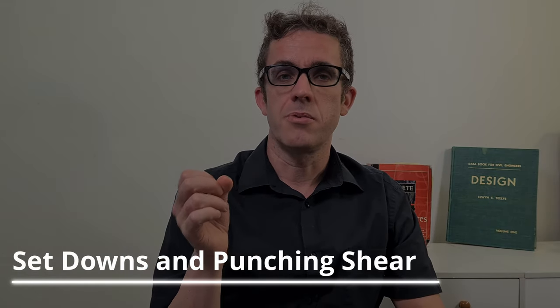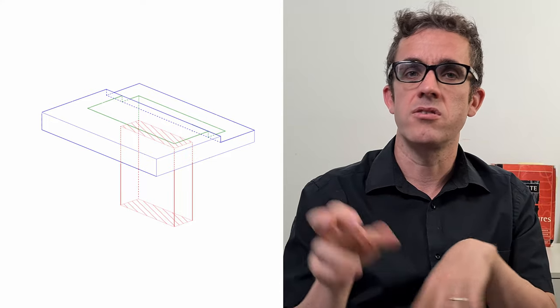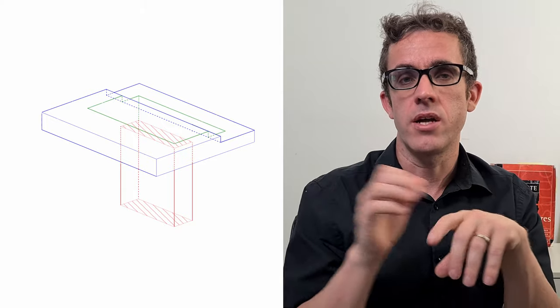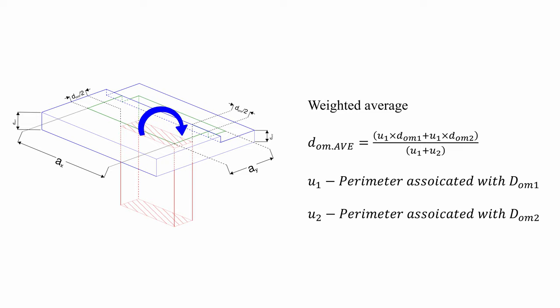Set downs are another area that can trip people up, as they generally take the deeper or shallower section, which can lead to either a conservative or unconservative design. The set down affects the depth of the perimeter. You can take the average perimeter — if bending moment is going in one direction, you can take the average as it's really the average of that punching shear perimeter that will be critical. But if the moment is going towards the shallower section, you may need to take a reduced depth, as that is going to be the critical plane. This is quite common on residential structures, especially where there are set-downs for bathrooms.